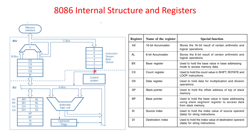This is the internal structure of the 8086. Our interest is only in the execution unit. Whatever instruction we write will be fetched from memory, then through the control system it will come to the arithmetic logic unit where it will be executed. The results will be stored in the AX, BX, CX, and DX registers.